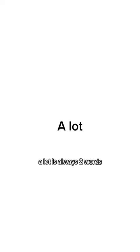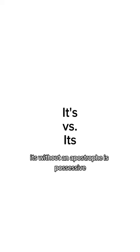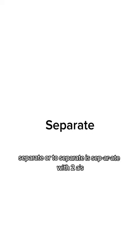A lot is always two words. It's with an apostrophe is short for it is. Its without an apostrophe is possessive. And separate, or to separate, is spelled with two A's: separate.